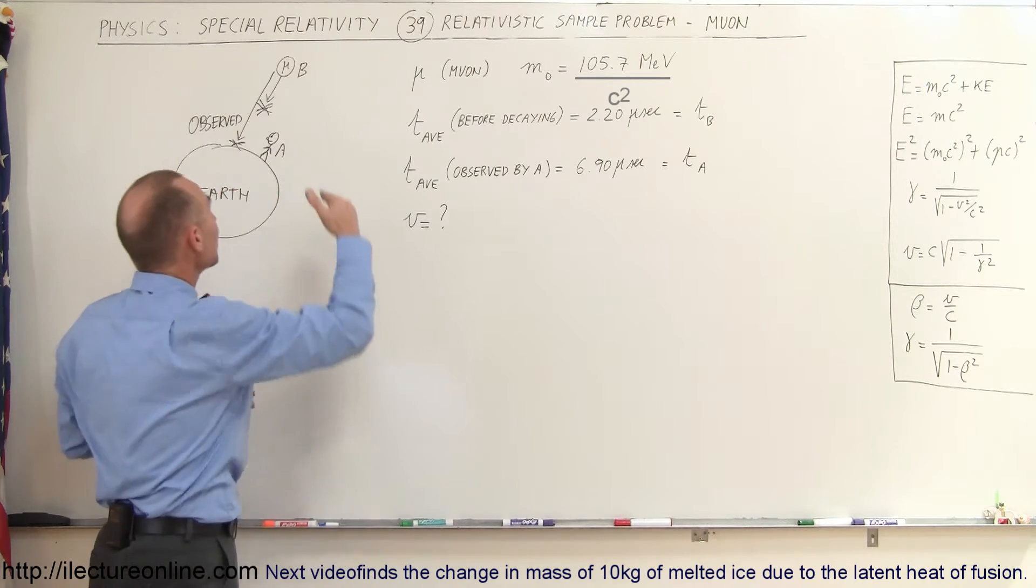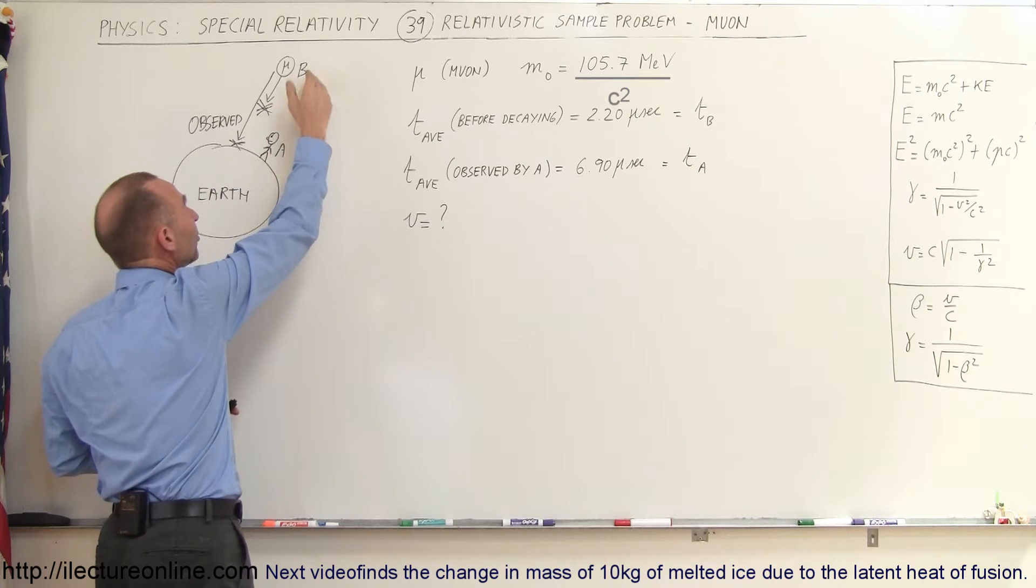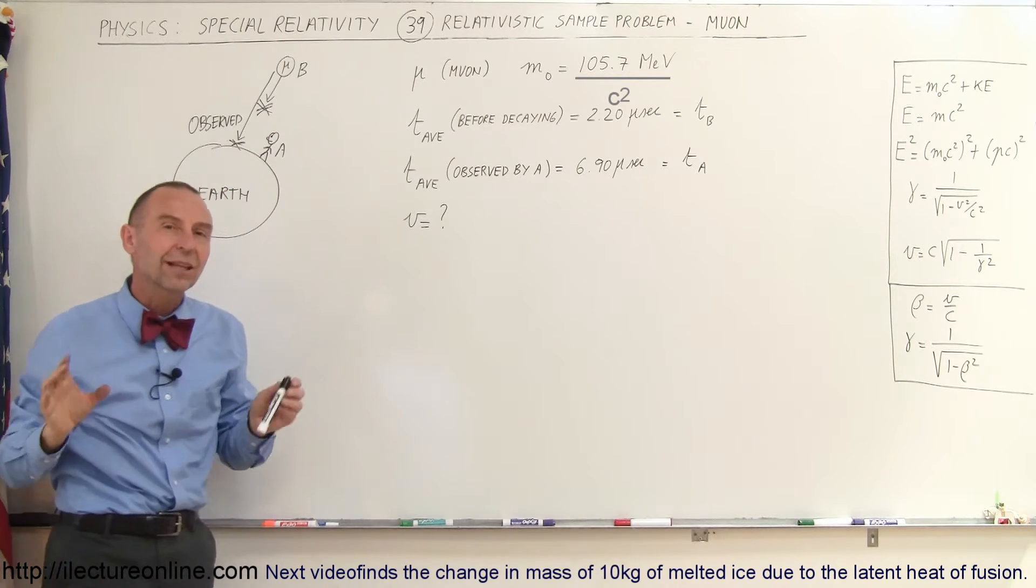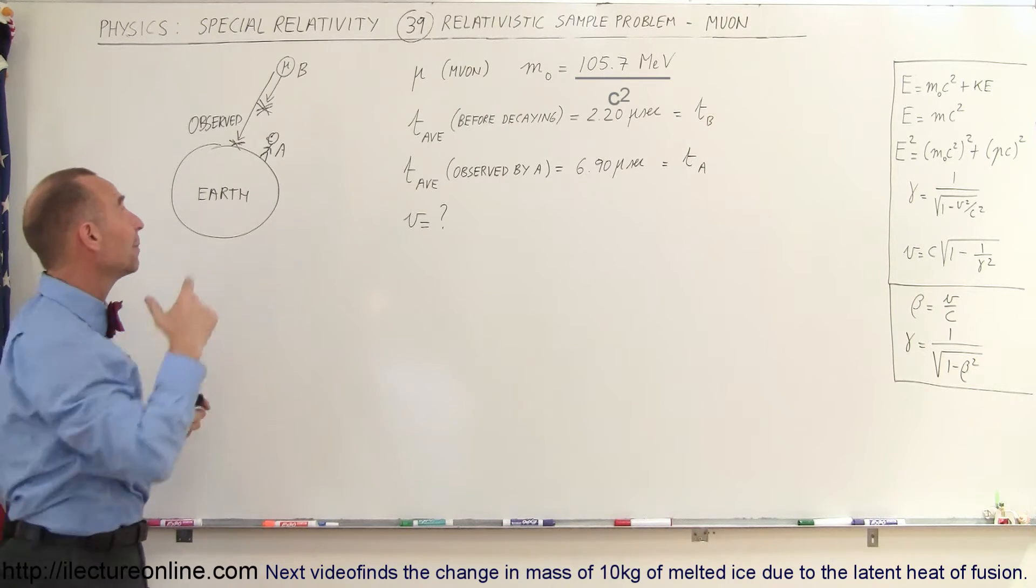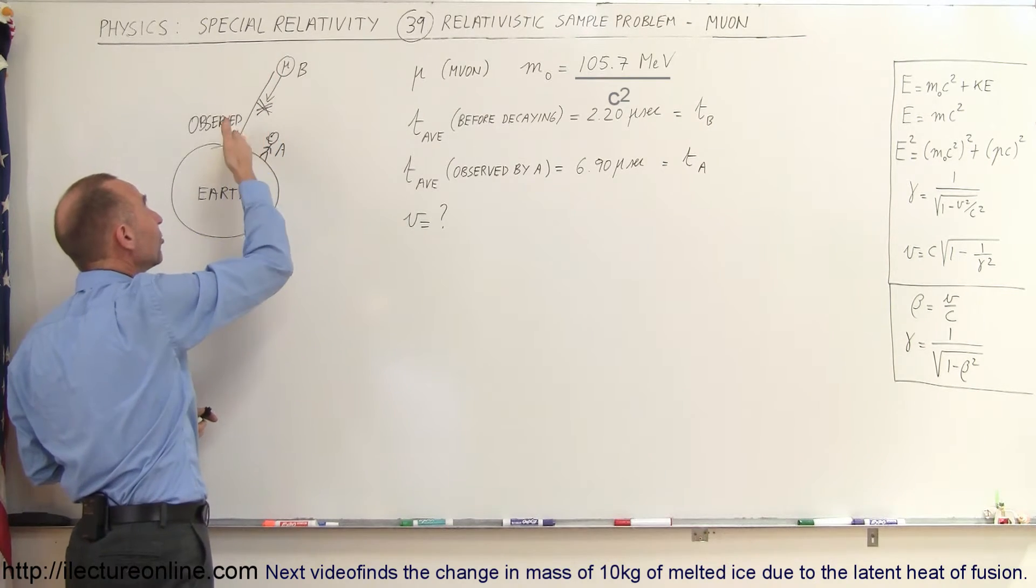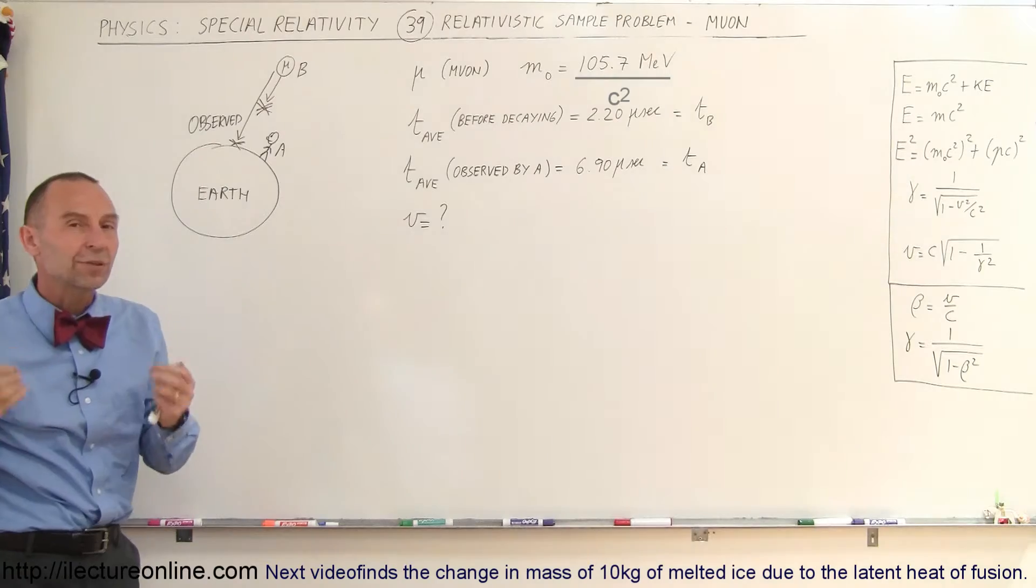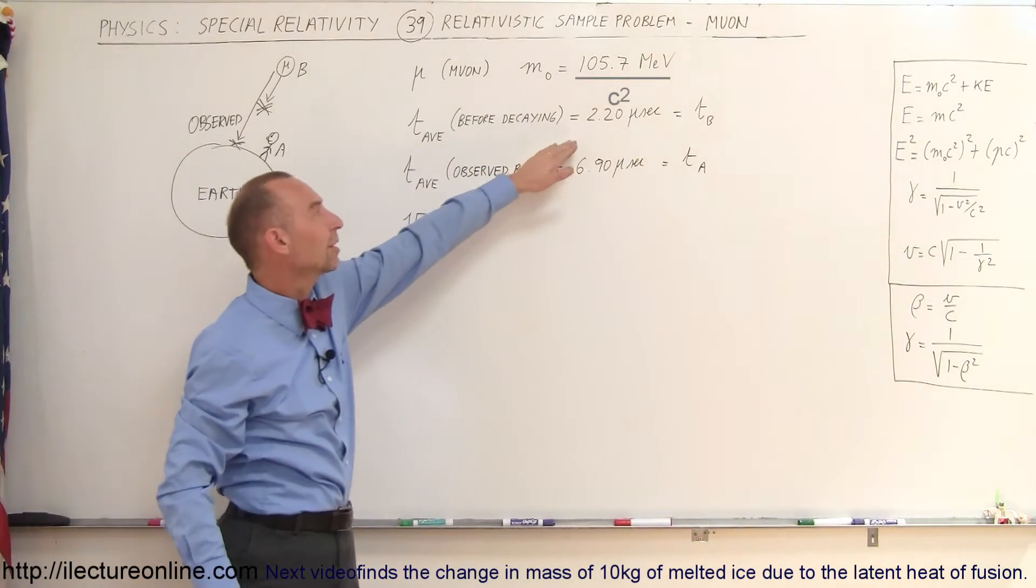But the muons that come into the Earth's atmosphere from outer space, when they travel at very high velocities, they appear to last longer before they decay. And because of that, they travel a much greater distance through the atmosphere than would be predicted otherwise by the time that they normally last.